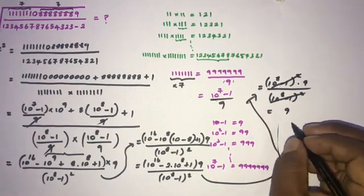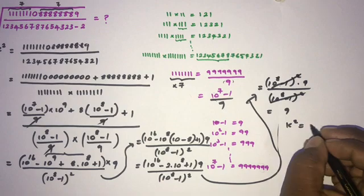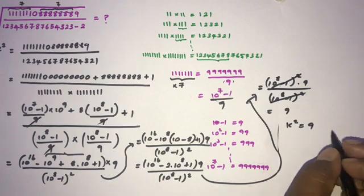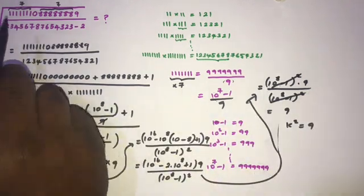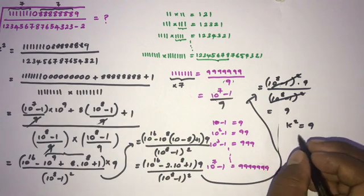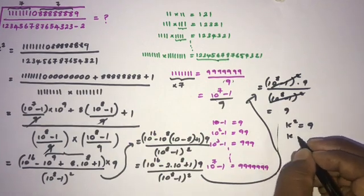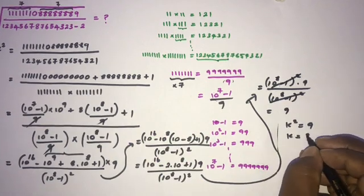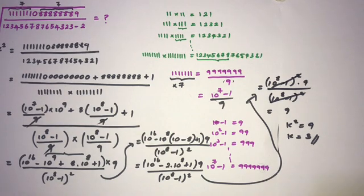Since we are evaluating a square root, we take the positive value, so k equals 3. If you like this video, please subscribe to this channel. Thank you for watching.